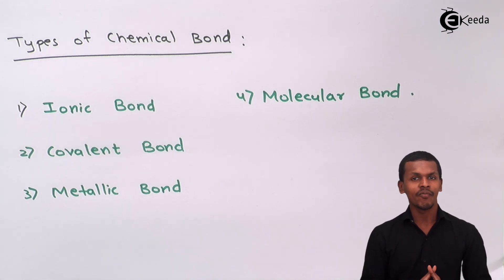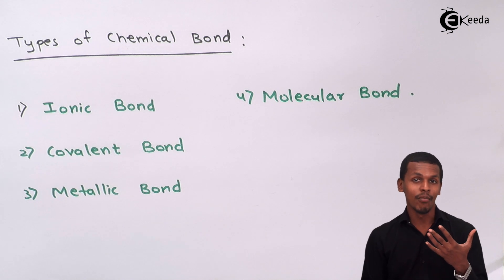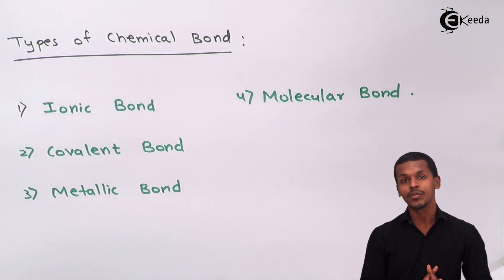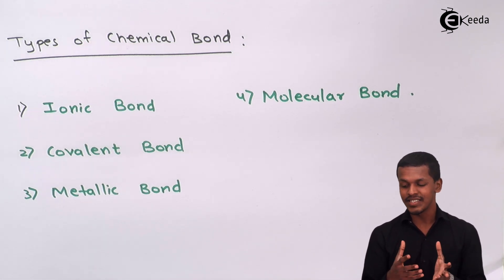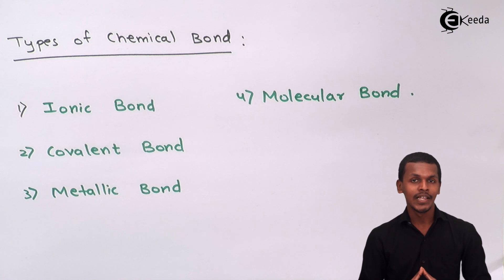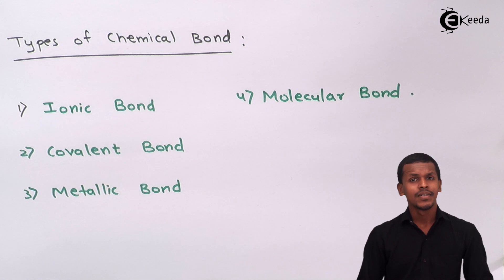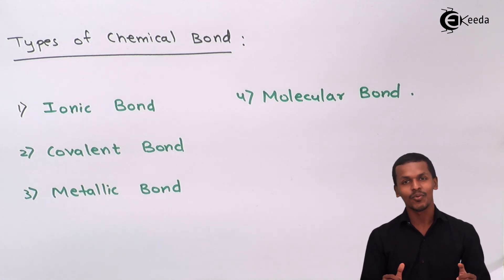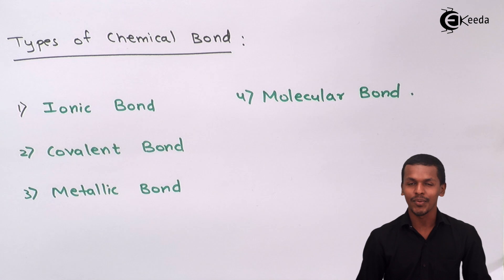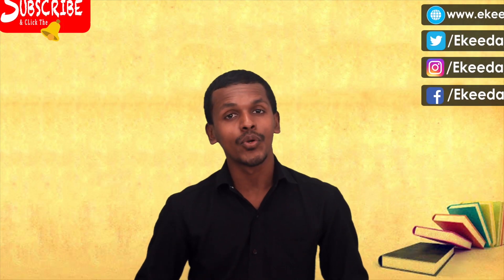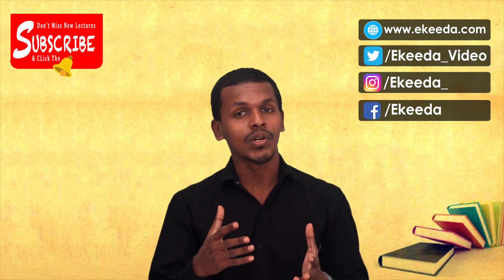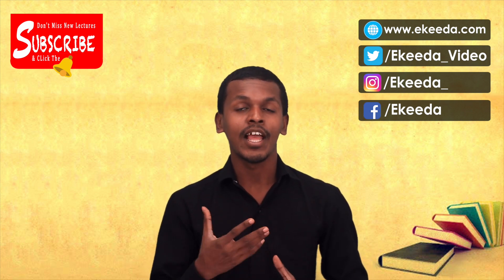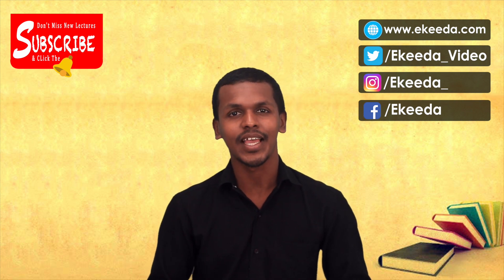Hydrogen bonding is not actually a bond that forms between atoms, but rather a kind of attraction between two different molecules — that is why it is called a molecular bond. So that's it, friends. I hope you have understood what is a chemical bond and what are the different types. Please share this video with your friends, subscribe, and thank you so much.